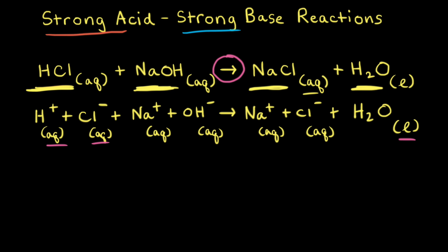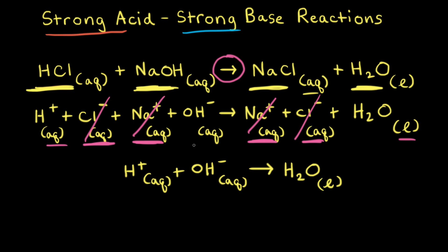We can use the overall ionic equation to determine the net ionic equation for this strong acid-strong base reaction. To find the net ionic equation, we first need to determine the spectator ions. Spectator ions don't participate in the chemical reaction. We have a sodium cation on both the reactant and product side, so we cancel it out. We also have a chloride anion on both sides, so we cross that out as well. The sodium cation and the chloride anion are the spectator ions. Once we remove the spectator ions, we're left with the net ionic equation: H⁺ + OH⁻ → H₂O.